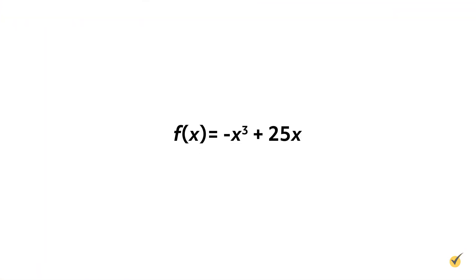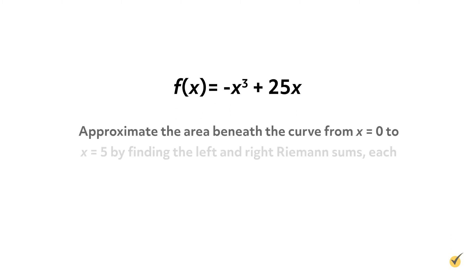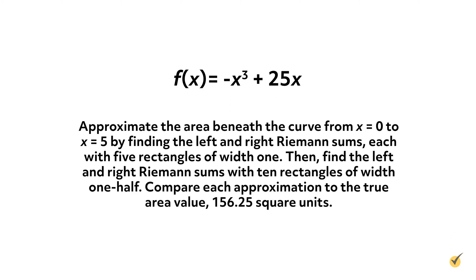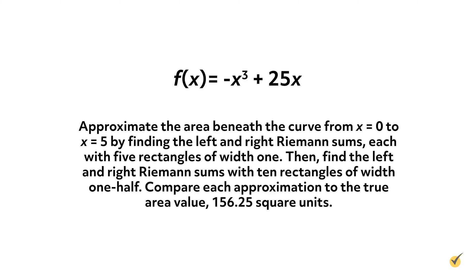Let's try a formal example now. Consider the function f(x) = −x³ + 25x. Approximate the area beneath the curve from x = 0 to x = 5 by finding the left and right Riemann sums, each with 5 rectangles of width 1. Then find the left and right Riemann sums with 10 rectangles of width 1/2. Compare each approximation to the true area value of 156.25 square units. We're going to take this one bit at a time. We are looking at the portion of the curve from x = 0 to x = 5.